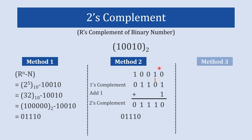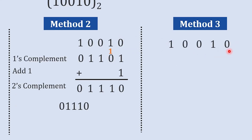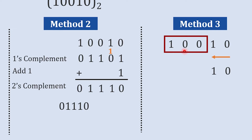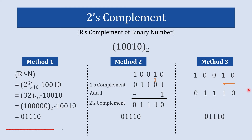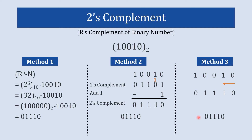Method 3 is even simpler. Write the number, then starting from the LSB move toward the MSB and stop where you encounter the first 1. Write that part of the number — including the first 1 — as it is. For the remaining bits, invert them: place 1 where there is 0 and 0 where there is 1. The result is 0 1 1 1 0, which is the 2's complement — the same as the previous two methods. Method 3 is the quickest.